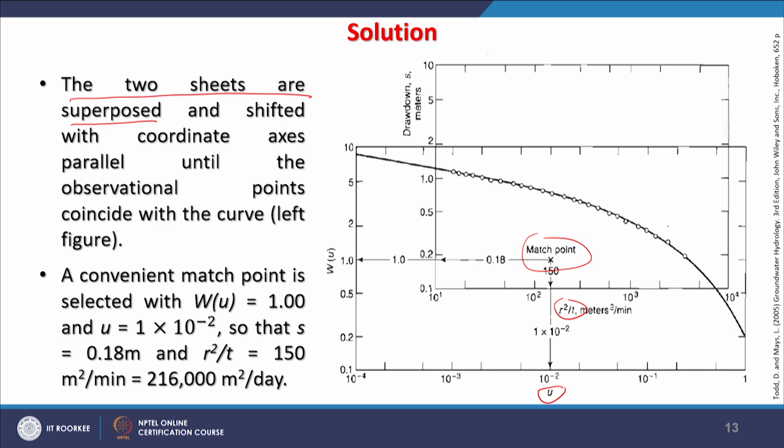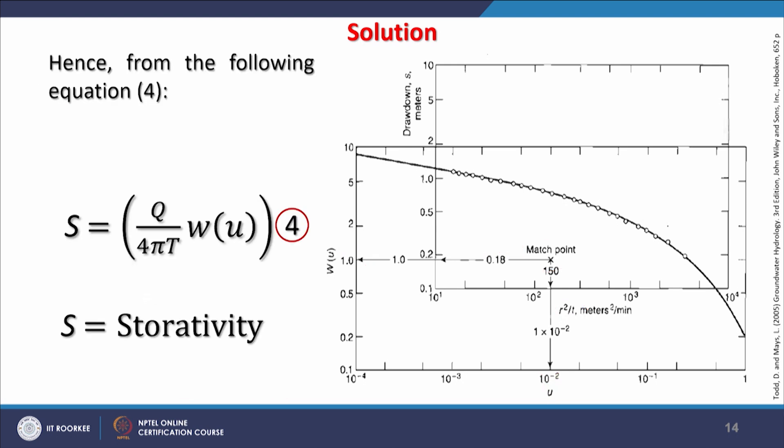Here we are getting this match point as per these two plots, and we get values of u, r²/t, whatever is required to be determined. A convenient match point is selected with w(u) = 1.0 in this example and u = 1×10⁻². These two values we have taken: s is 0.18 meters and r²/t is 150 square meters per minute. We get a value of 216,000 square meters per day. In this way, we get the rate of withdrawal from the well.